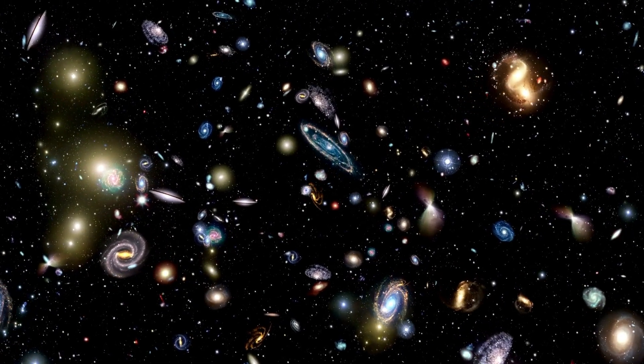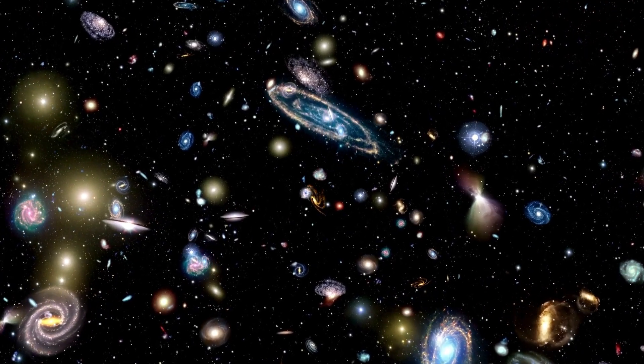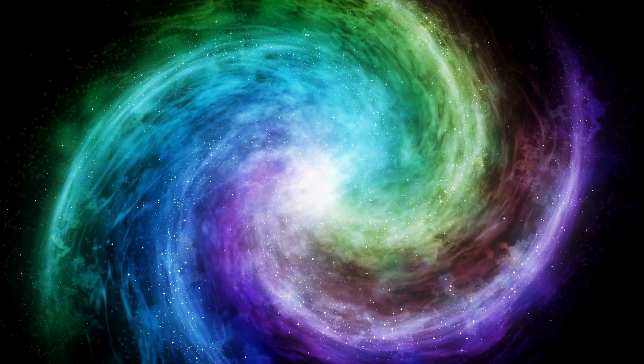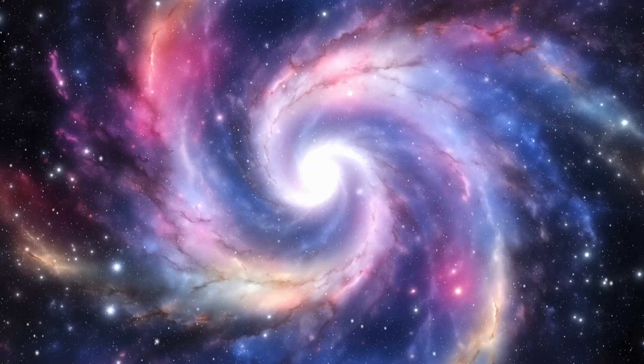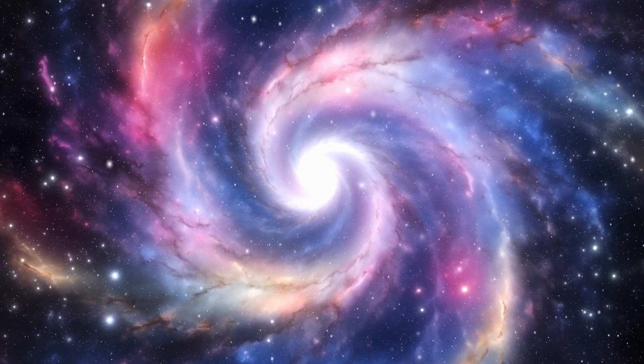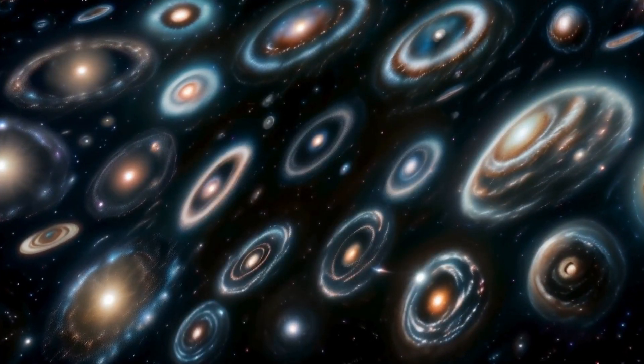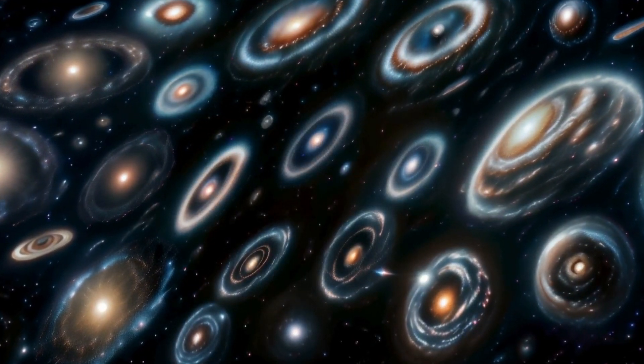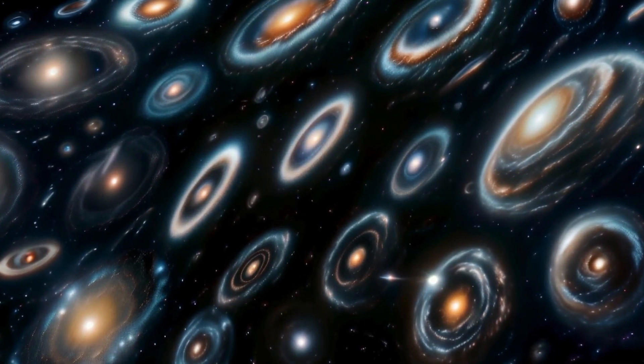This black hole was named Cygnus X1, and it is located in the constellation Cygnus, about 6,000 light years from Earth. And it was no small discovery. It's about 14 times brighter than the sun and incredibly dense, which causes it to have a strong gravitational pull. The gravitational pull is so strong that not even light can escape it. This is why it is called a black hole.